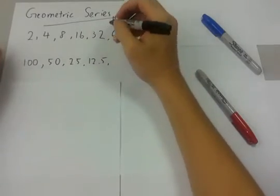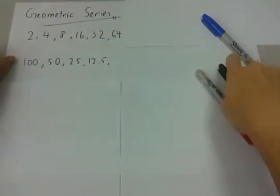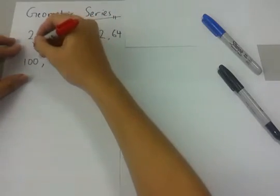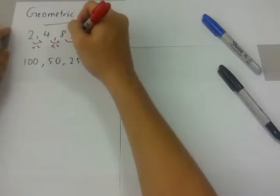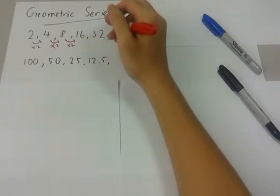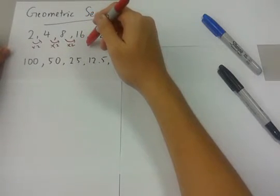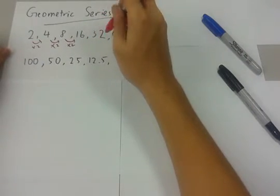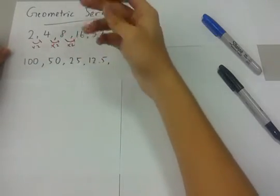As you can see, all of these numbers are multiplied by 2. So, 2 times 2 we get 4, and 4 times 2 we get 8, 8 times 2 we get 16, and so on. This times 2 is the common ratio.